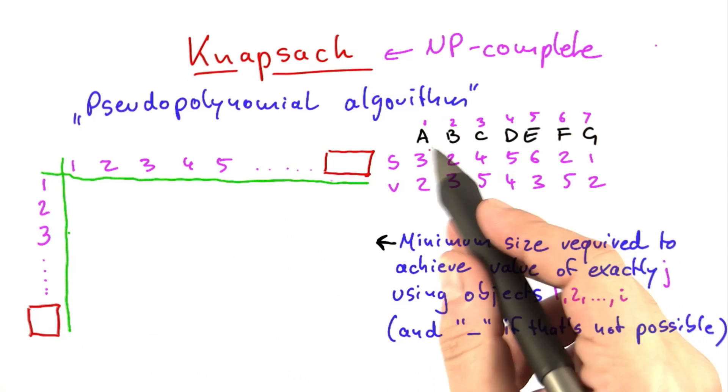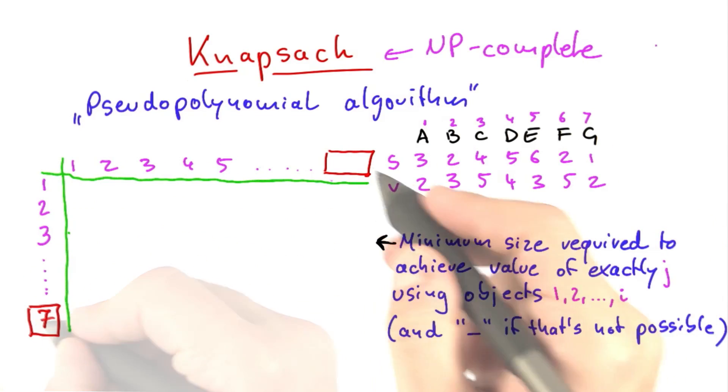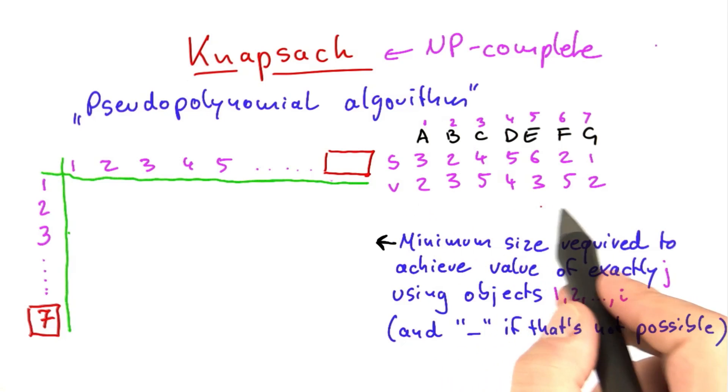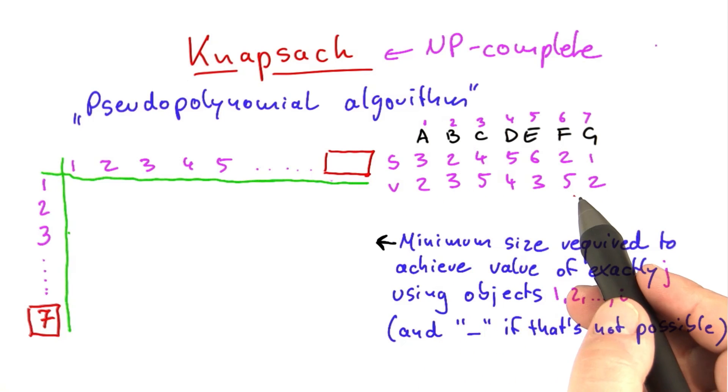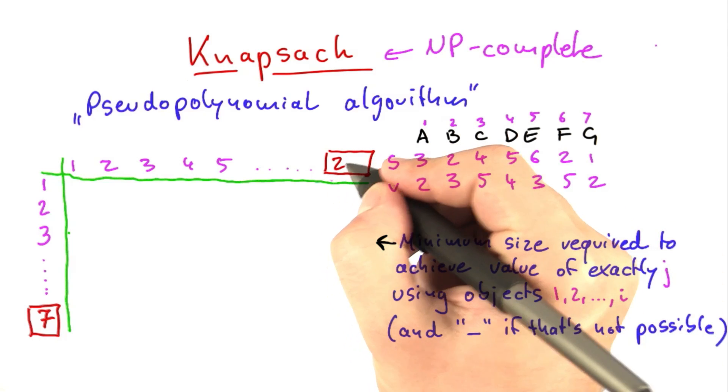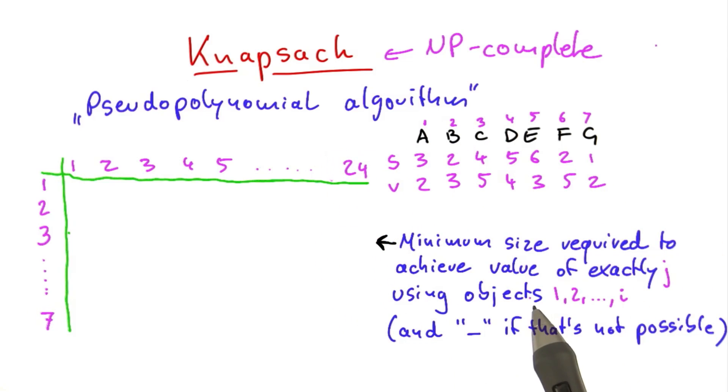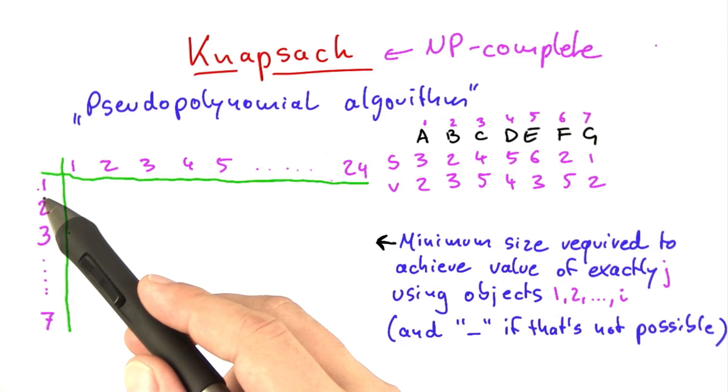So the number of rows is the number of objects, and that is 7. And the number of columns is the total sum of all the values. So 2 plus 3 plus 5 plus 4 plus 3 plus 5 plus 2, which is 24.